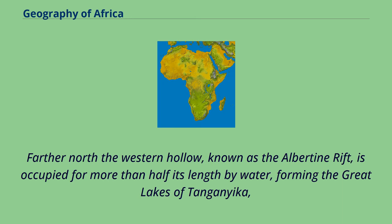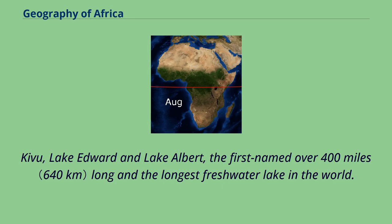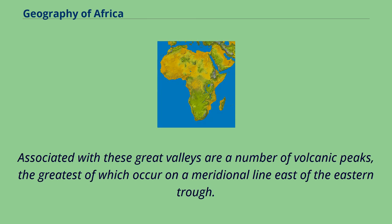Farther north the western hollow, known as the Albertine Rift, is occupied for more than half its length by water, forming the Great Lakes of Tanganyika, Kivu, Lake Edward, and Lake Albert, the first named over 400 miles long and the longest freshwater lake in the world. Associated with these great valleys are a number of volcanic peaks, the greatest of which occur on a meridional line east of the eastern trough.